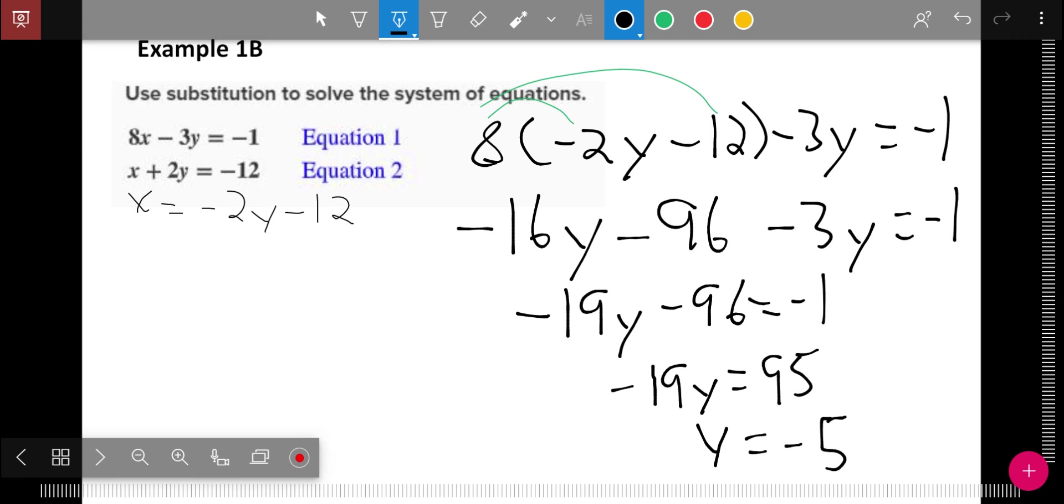Now I'm not done. I have to go back over here to X equals negative 2 and plug the negative 5 in. So that becomes 10 minus 12. And so X equals negative 2. My final answer is negative 2, negative 5.